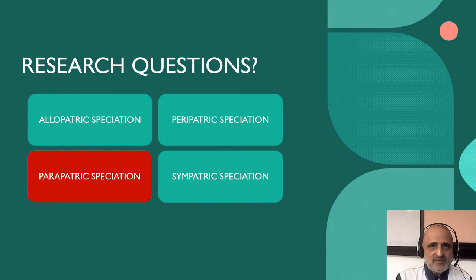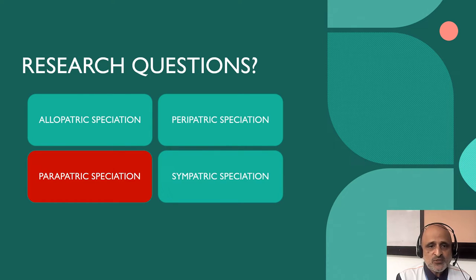One of the primary research questions we have to address is the matter of speciation. Do the molecular markers show evidence of a speciation event which may be caused by geographic distribution and the lack of corridors between riverine ecosystems?